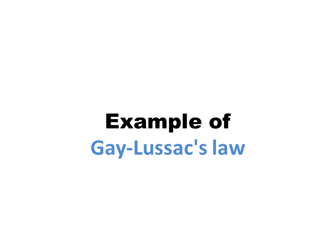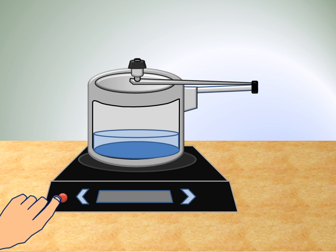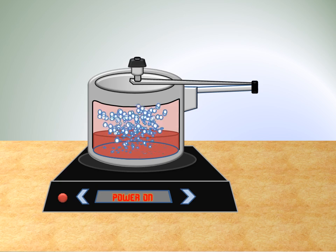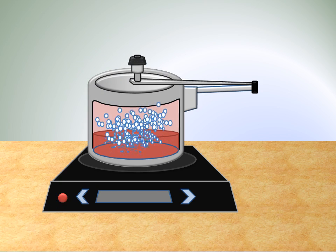Example of Gay-Luzak's Law: the best example is a pressure cooker. Switch on the induction cooker — power on. The temperature of the cooker increases, and the pressure inside also increases. The uniform pressure inside the cooker decreases the cooking time.